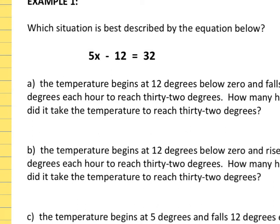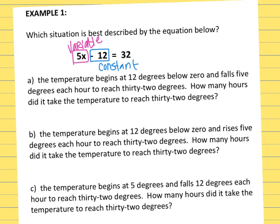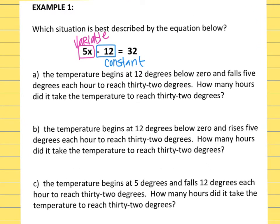The variable number is 5X, so that means 5 is going to get repeated. Then the constant number is negative 12, and then the number at the end, the total, is going to be 32. So the variable number is positive 5X. When we read through these story problems, those are the clues we're going to look for.